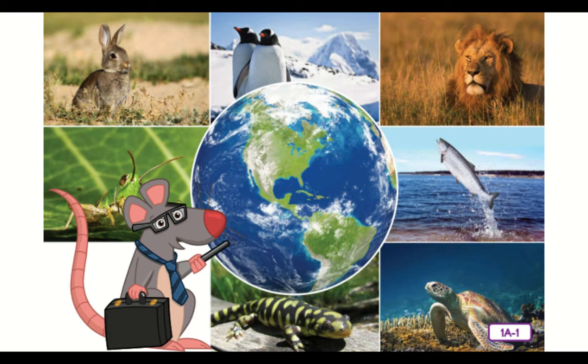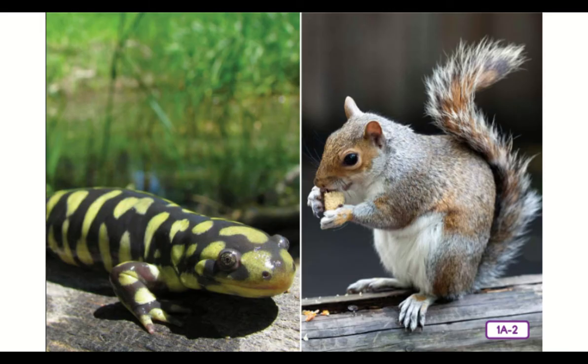How do you tell them apart? How do you recognize or identify them? One way that we make sense of our world is by sorting things into categories or groups. Look closely at these pictures of a salamander and a squirrel and notice their characteristics. Can you name any ways that a salamander and a squirrel are alike? How are they different? What other characteristics can you think of to help us sort animals into categories?